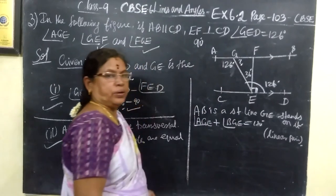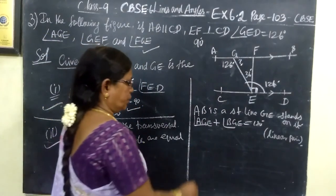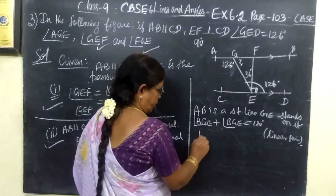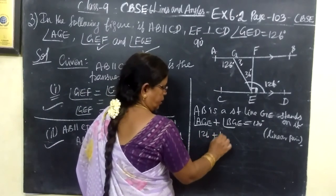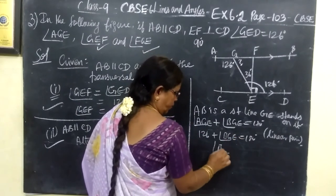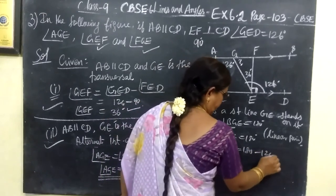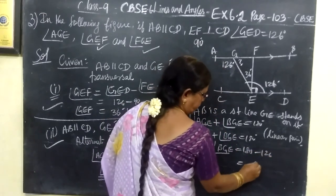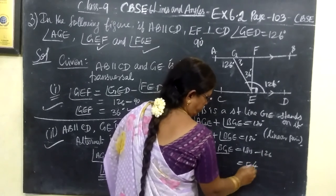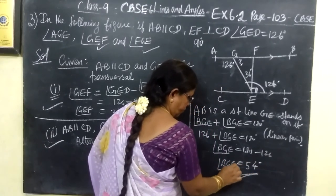We know if the sum of the two angles is 180 degrees, it is linear pair. So AGE is 126, and then BGE equal to 180. Therefore, BGE equal to 180 minus 126. Here it is 7 minus 2 is 4, so the answer for this is 54 degrees.